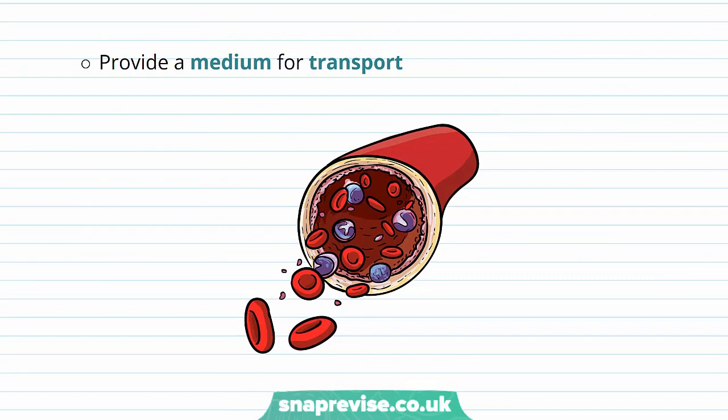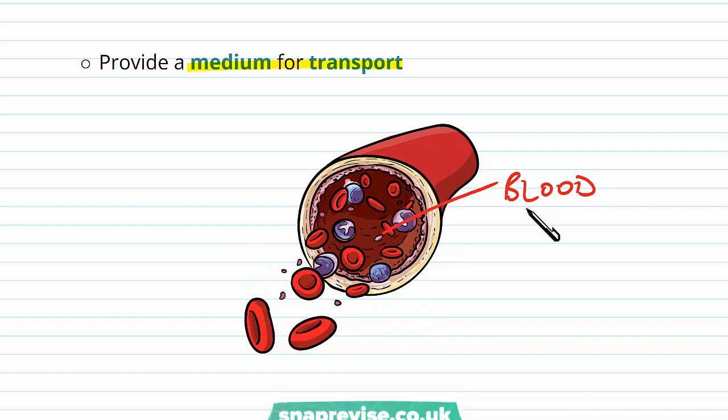Water also provides a medium for many transport systems. For example, the blood system uses blood to transport oxygen and other things around the body. As a medium, it's great because it can travel through tubes as a liquid and flow to various locations.